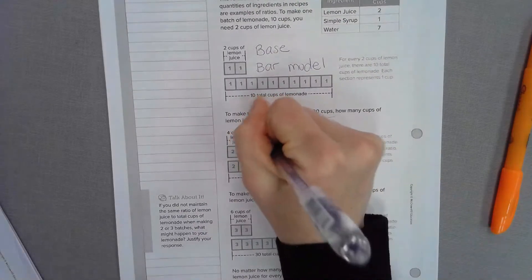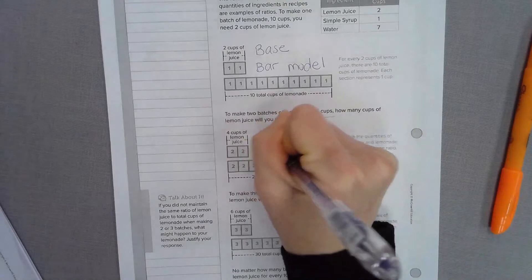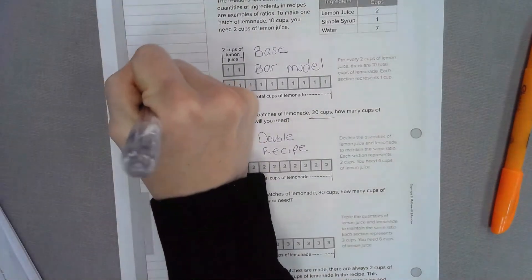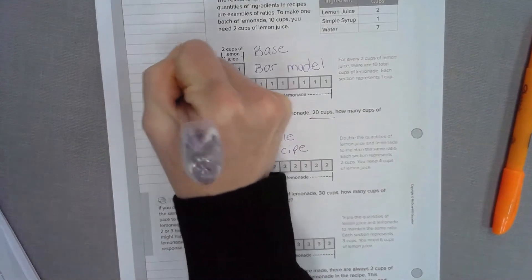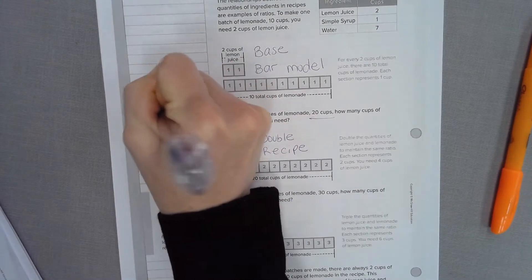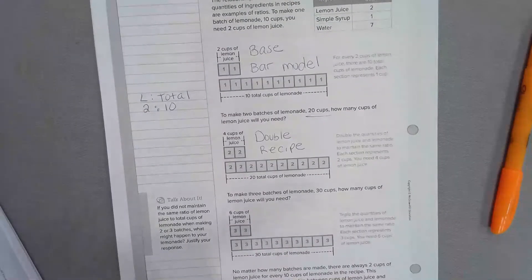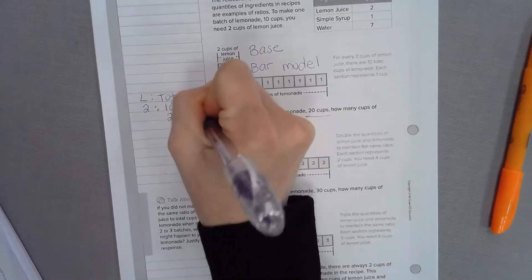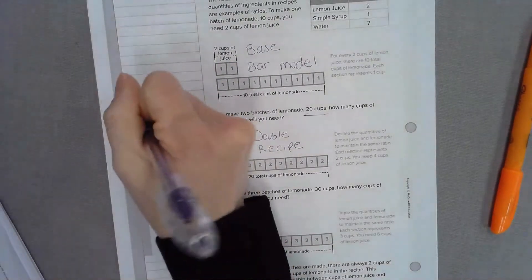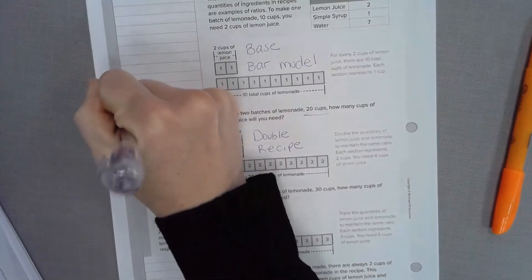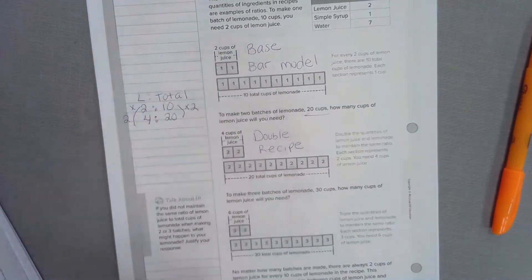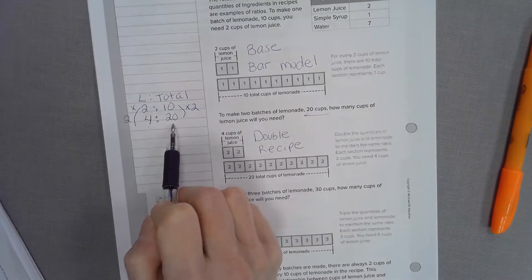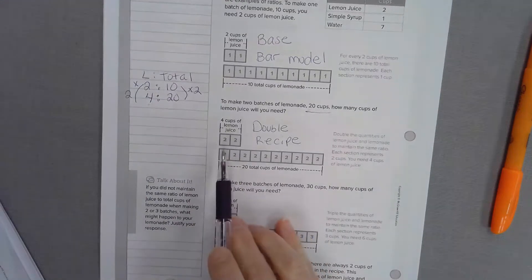So here we're doubling the recipe. Let's show it off to the side. We have our lemon juice to the total cups. That ratio is 2 to 10. And if we have 20 total cups, we're timesing it by 2. So that means we have to times the lemon juice by 2. So 4 cups of lemon juice, we'd have 20 total cups for our recipe. You can see it in our diagram over here.